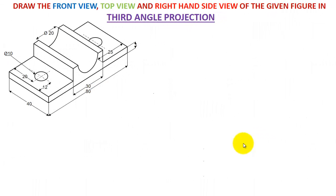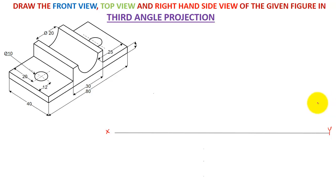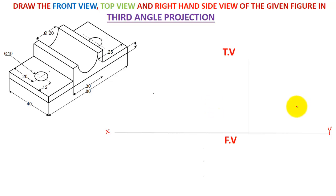Hello students, this is the fourth lecture in the series of orthographic projection, and this is again a third angle projection. Let's make an XY line, which is a reference line on which we are going to make a top view and front view. In third angle projection, the top view is always above the XY line and the front view is always below the XY line, as opposite to first angle projection.